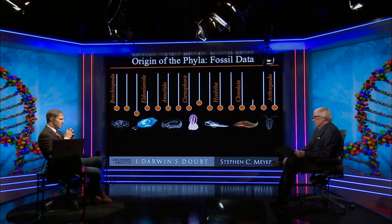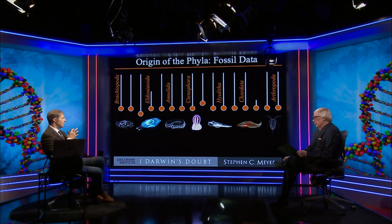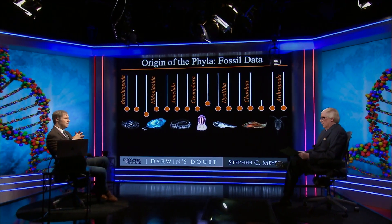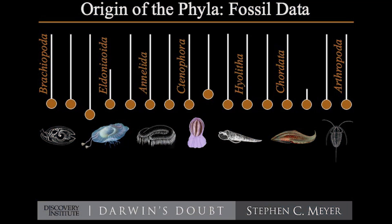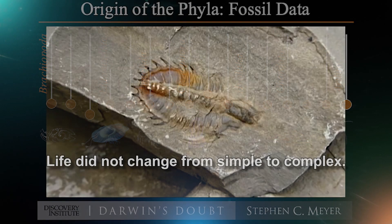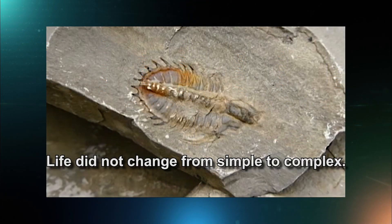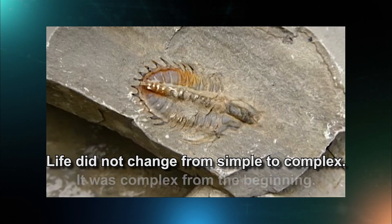They are tightly integrated anatomical systems — multiple systems. The trilobites there on the end had compound eyes, very similar to modern insect eyes: very sophisticated organs already present in these animals from the very beginning. So it's not simple to complex — it's complex from the beginning.